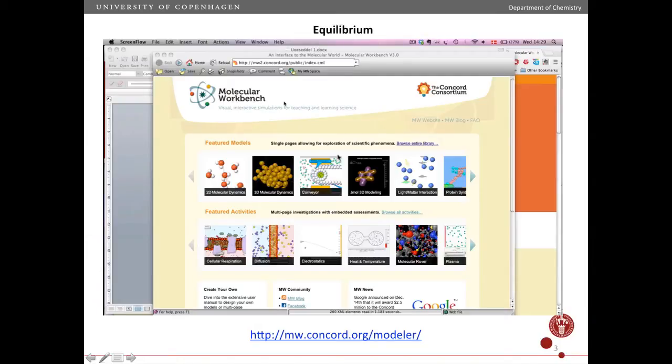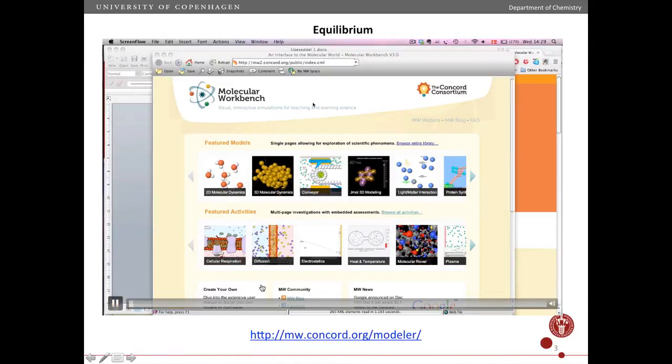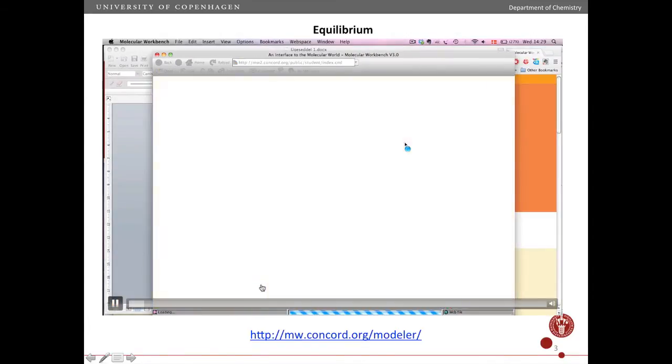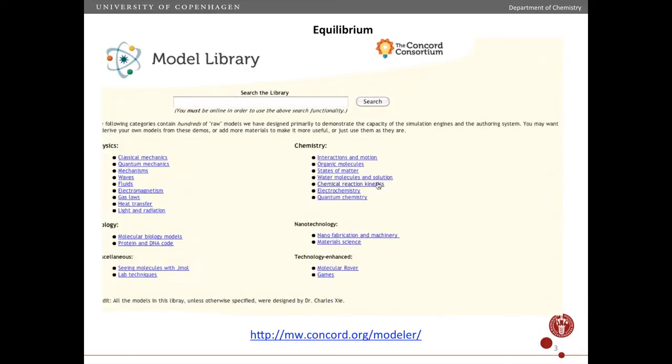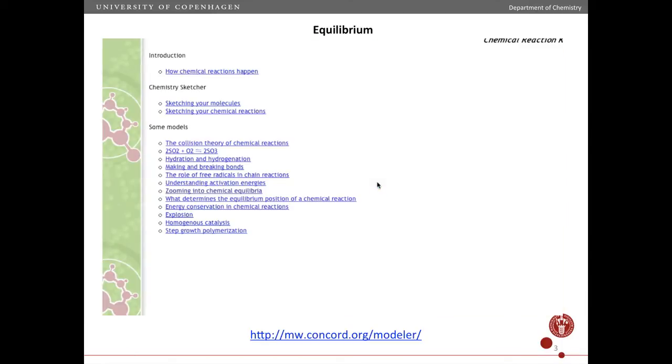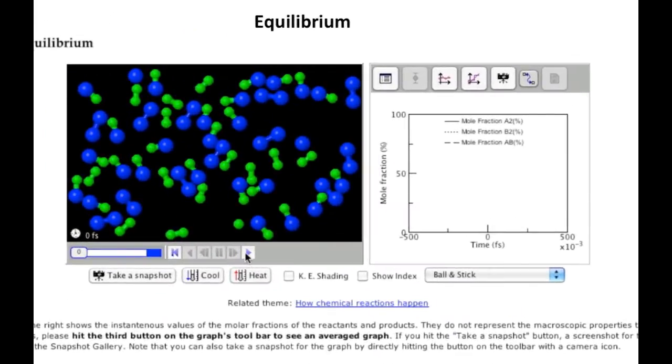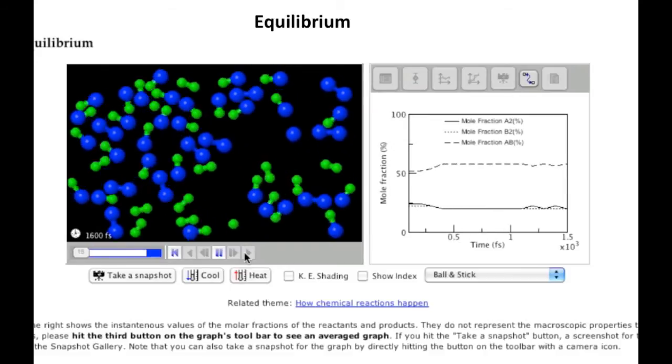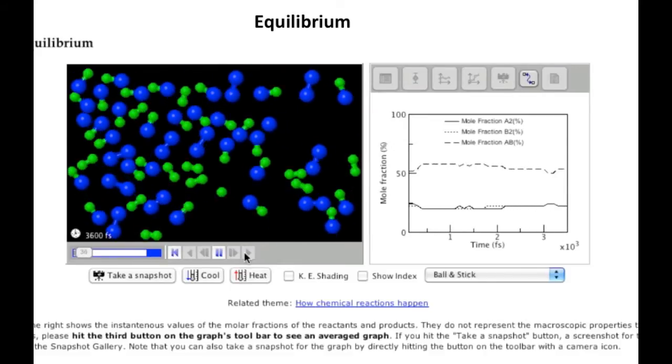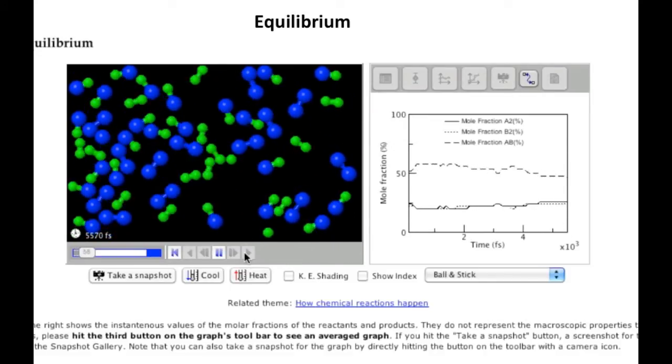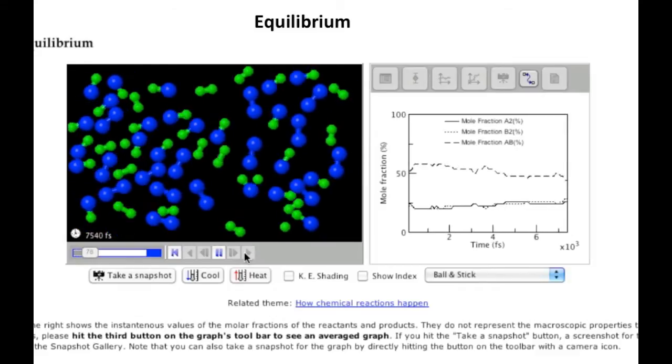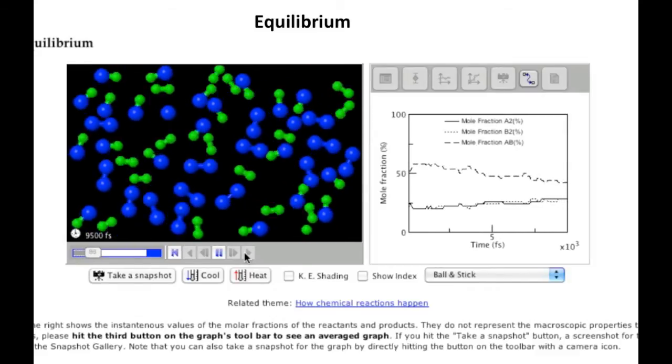Here I'll introduce the concept of equilibrium using a simulation made with Molecular Workbench, which is a free software package that you can download and install on your computer. So what we have here is a simulation. Two molecules, a blue one and a green one, can react to make a blue-green molecule.